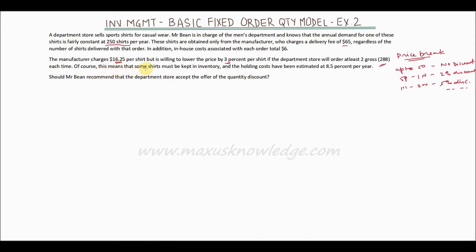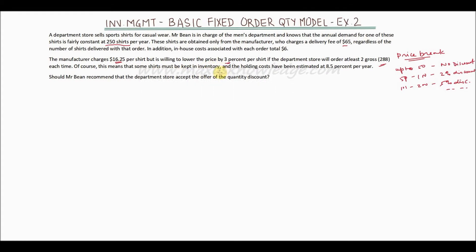Of course, ordering that quantity means some shirts must be kept in inventory — the excess shirts will need to be stored for a longer time. The holding cost has been estimated at 8.5% per year. The question is: should Mr. Bean recommend that the department store accept the offer of the quantity discount?